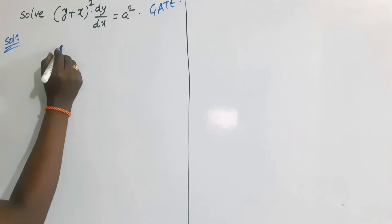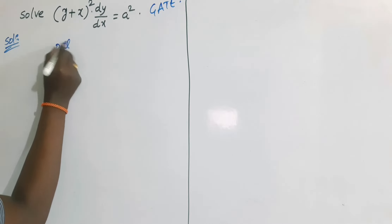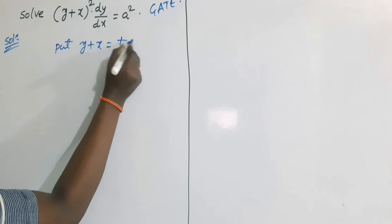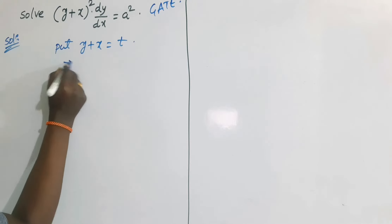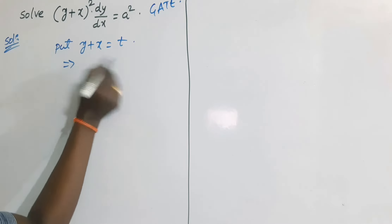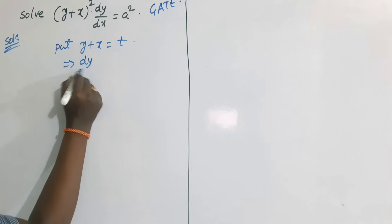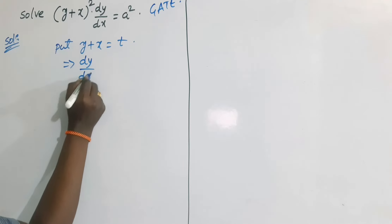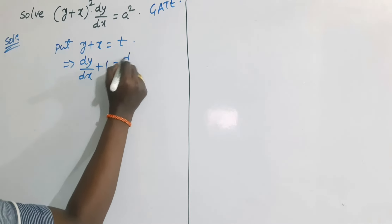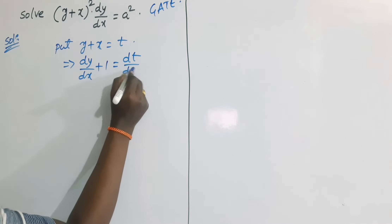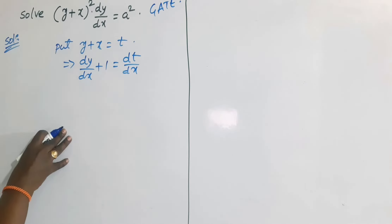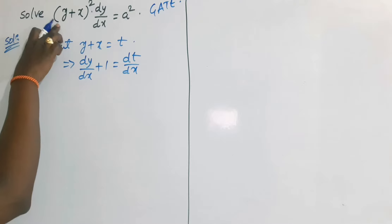I will use the substitution method. Put y + x = t. Taking the derivative with respect to x, we get dy/dx + 1 = dt/dx, where the derivative of x with respect to x is 1 and derivative of t with respect to x is dt/dx. So we change the dependent variable y to t.